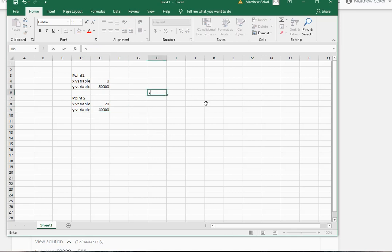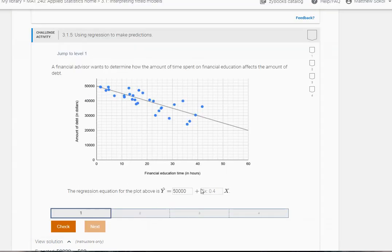Okay, so the slope—well, it's the change in y variables, so it's this minus this divided by the change in the x variables. Now you have to make sure that you have them in the same order, so this minus this. And it looks like my slope here is negative 500, so let me put that in: negative 500.